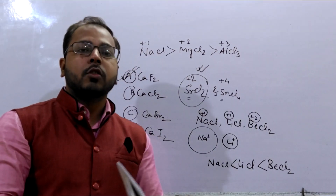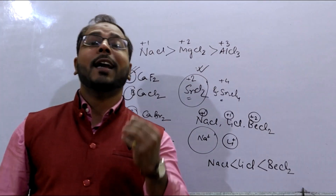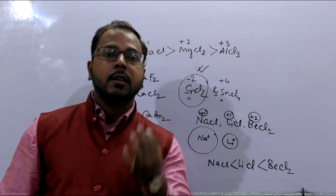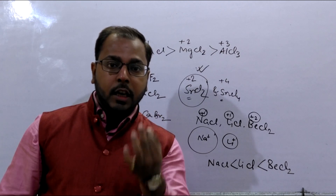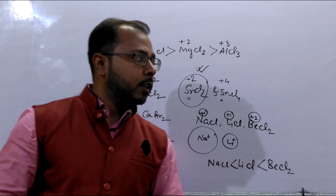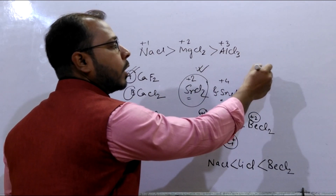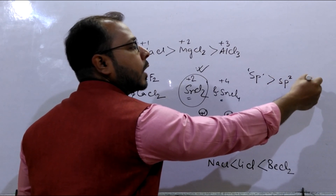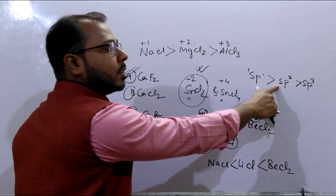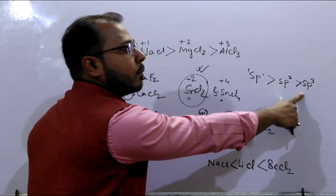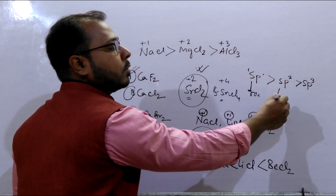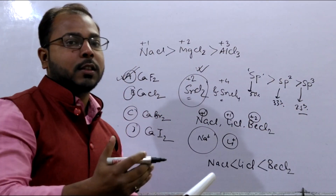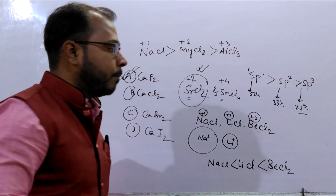To solve the next question, we need to know that with the increase in S-percentage in hybridization, electronegativity value increases. That means SP-hybridized carbon is more electronegative than SP2, which is more electronegative than SP3. Because SP has 50% S-character, SP2 has about 33%, and SP3 has about 25%.